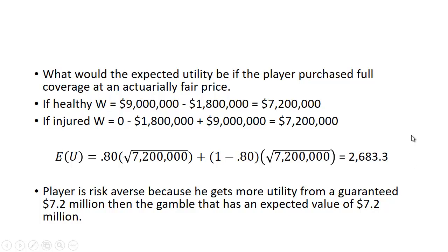Remember that if he was not insured his expected utility was 2,400. So that means this player is risk averse, because he gets more utility from a guaranteed 7.2 million dollars than from a gamble that has the same expected value of 7.2 million dollars.